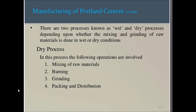Let's discuss about the manufacturing of Portland cement. There are two types of methods by which cement is produced: one is the dry process and another is the wet process. The dry process involves mixing of raw material, burning, grinding, and packing and distribution.